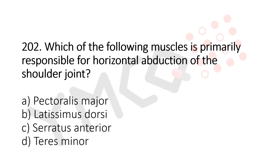Question 202: Which of the following muscles is primarily responsible for horizontal abduction of the shoulder joint? Option A: pectoralis major. Option B: latissimus dorsi. Option C: serratus anterior. Option D: teres minor. The answer is option B, latissimus dorsi.